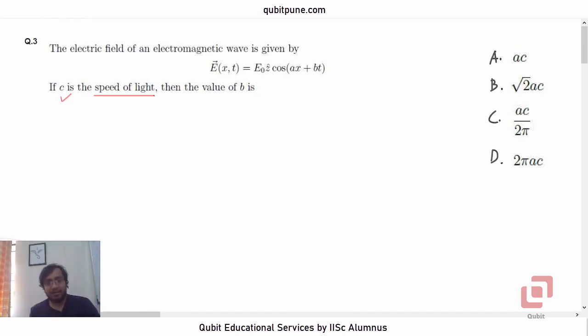Let us first remind ourselves that an electromagnetic wave is essentially a transverse wave. Correct. And the argument of the trigonometric function here, which is ax plus bt in this case, okay, ax plus bt.